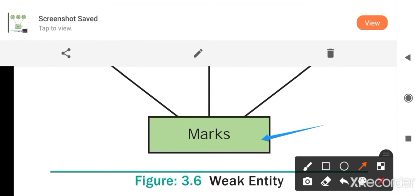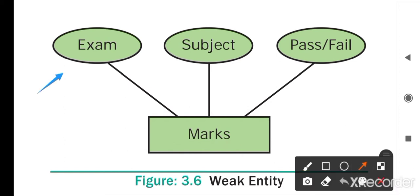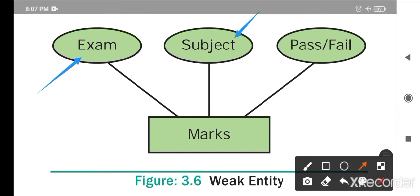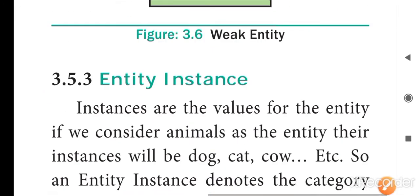For example, we have three attributes — exam, subject, and pass or fail. These three attributes are dependent on the main entity. This is an example of a weak entity, because the weak entity is dependent on some attributes and they are dependent on each other.